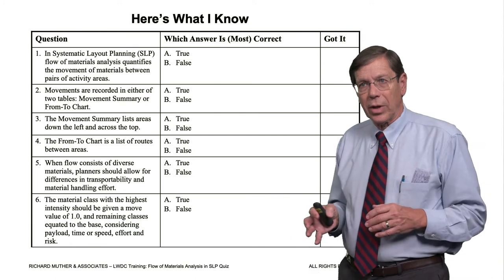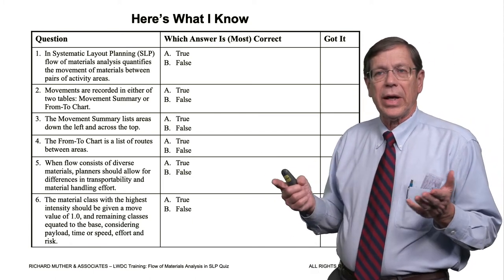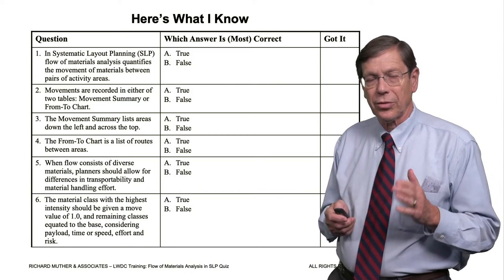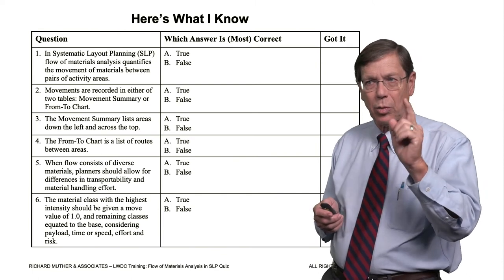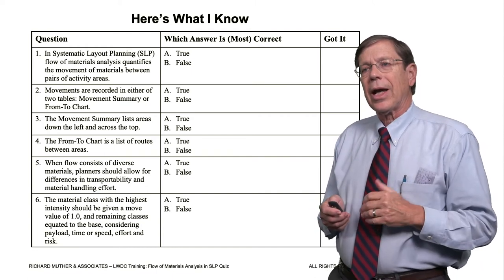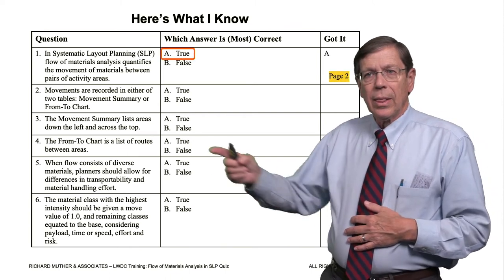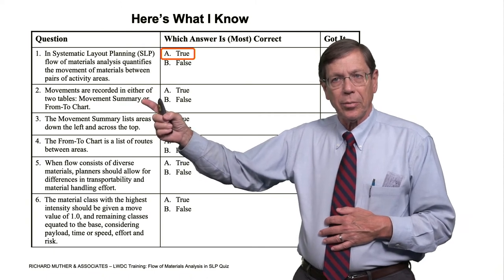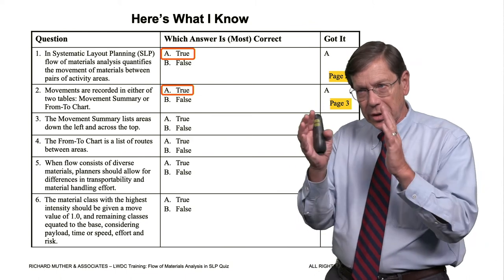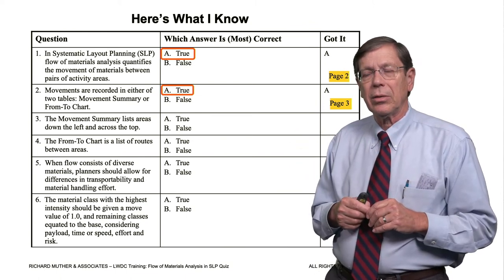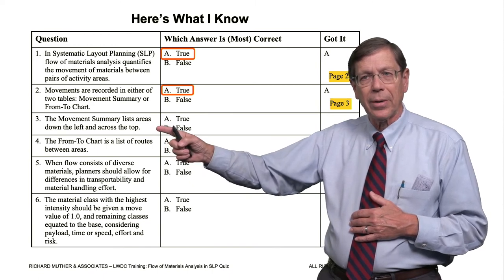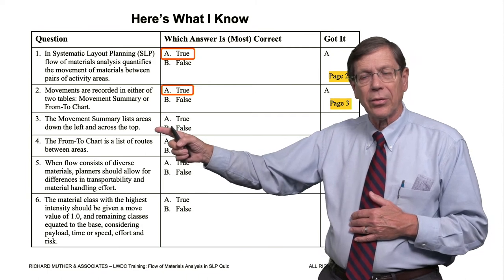Now, let's summarize with a quick self-test. In systematic layout planning, flow materials analysis quantifies the movement of materials between pairs. True or false? Yes, it does. Now, we talked about it as routes, but what is a route? A route is a flow line that connects two areas. So it is, in fact, capturing flow between pairs. So that's a true statement. Movements are recorded in either of two tables, the movement summary or the from-to chart. It's very important that you understand that. We taught flow analysis using the movement summary because it's a very compact document. But the from-to chart is actually more common in SLP. The movement summary lists areas down the left and across the top. True or false? False. That's backwards.